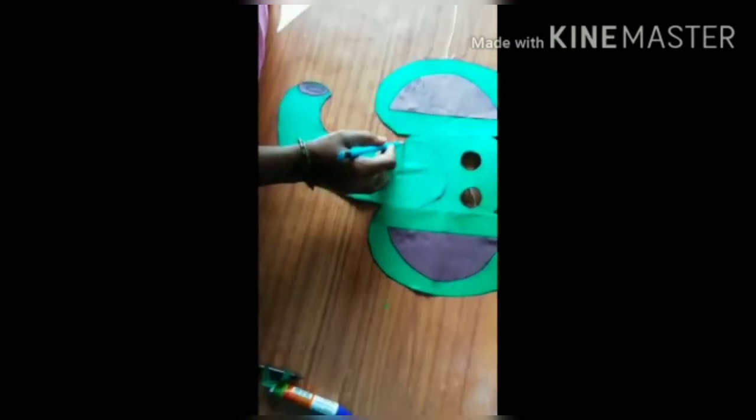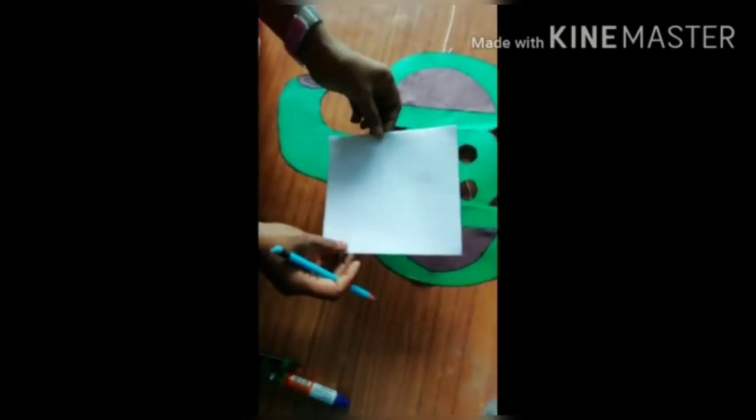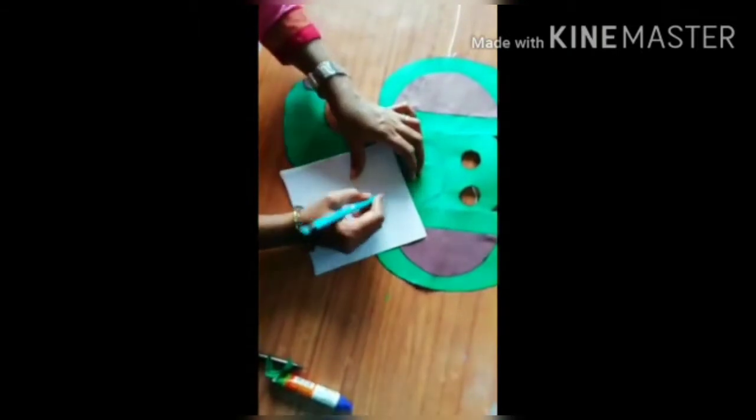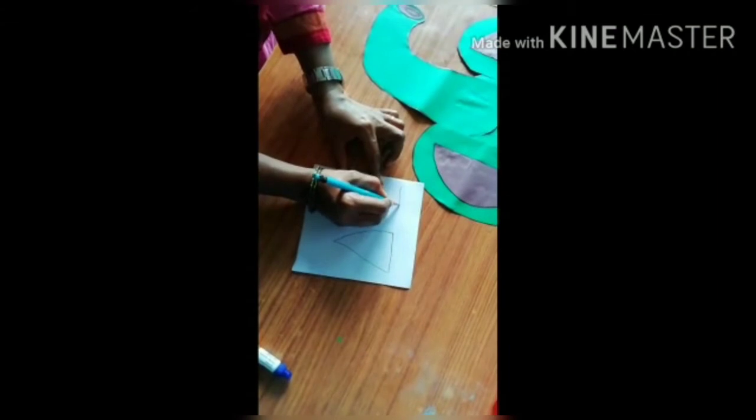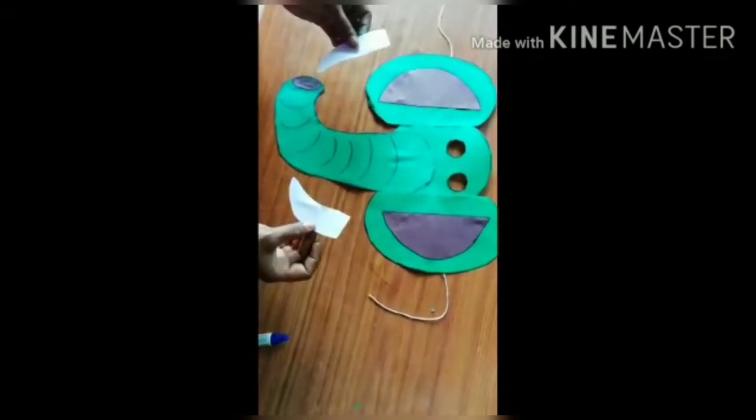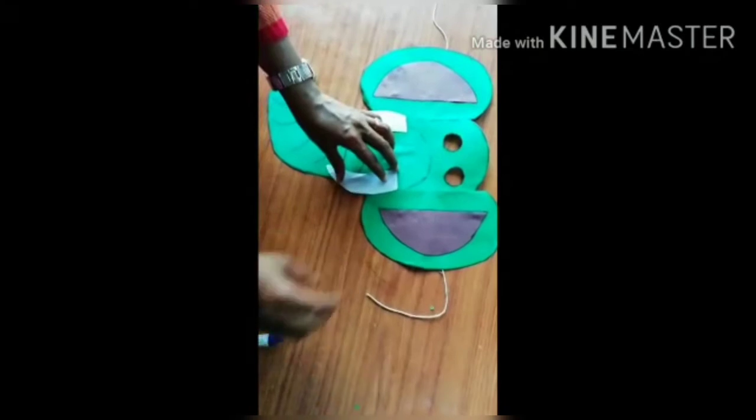I am going to make these teeth with white paper, just simply place on the face and see how exactly you want the teeth and then cut it and stick it with any glue you have.